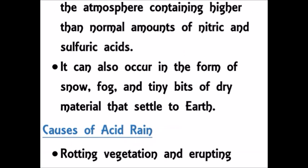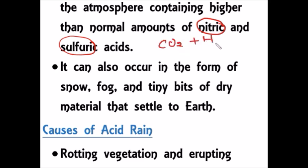If you notice the definition, you can understand that only sulfuric acid and nitric acid are mentioned. What about carbon dioxide? Carbon dioxide also gives carbonic acid when it joins with water. Is it not part of acid rain? Let's discuss further.